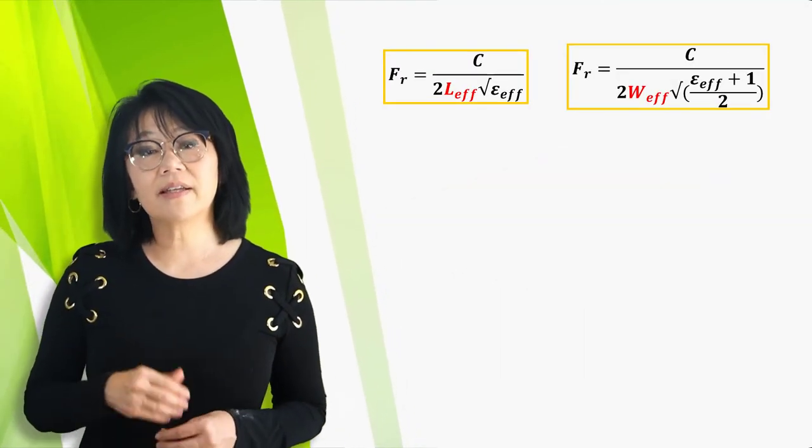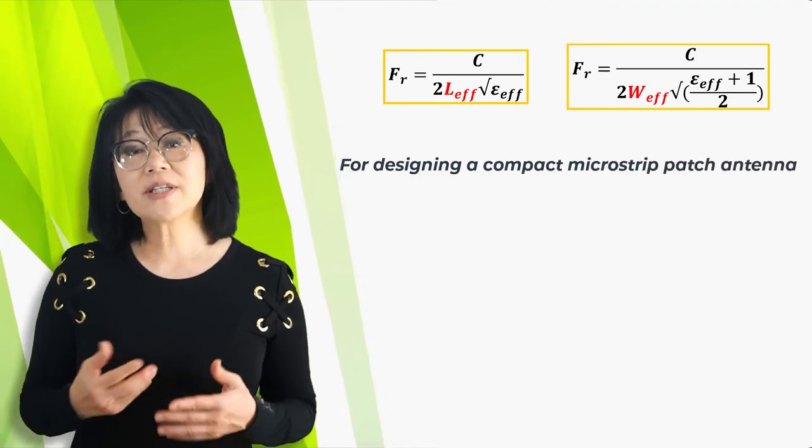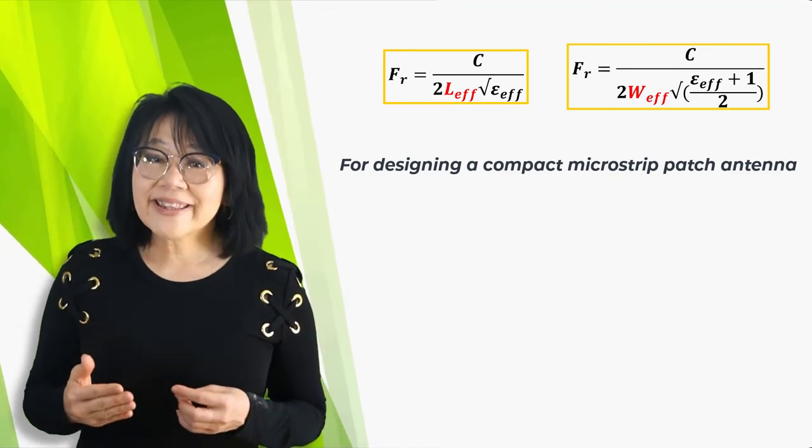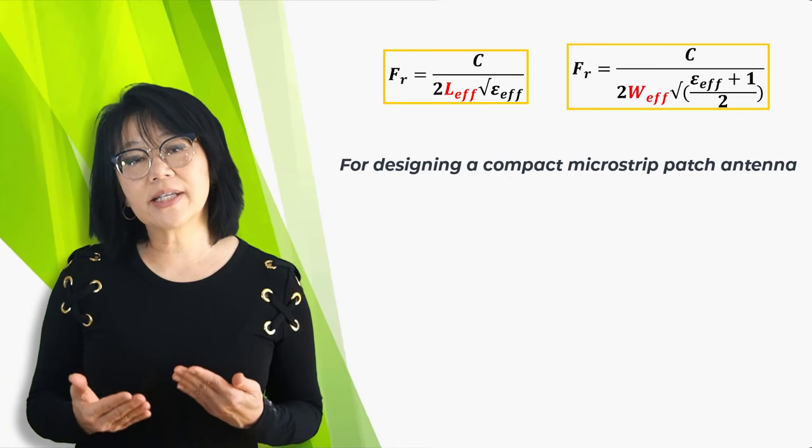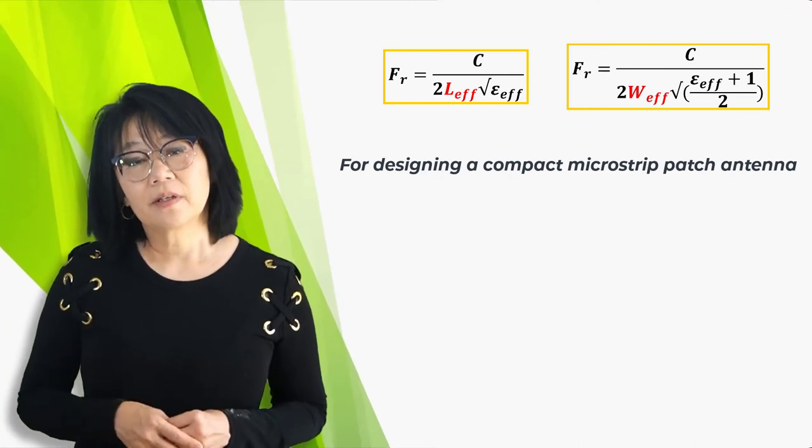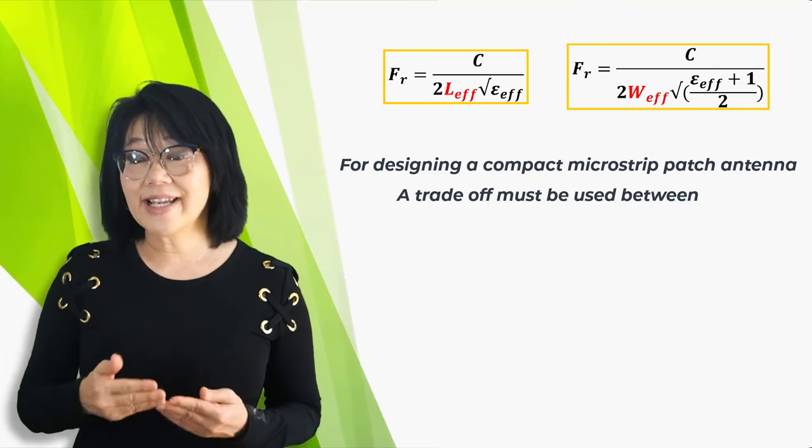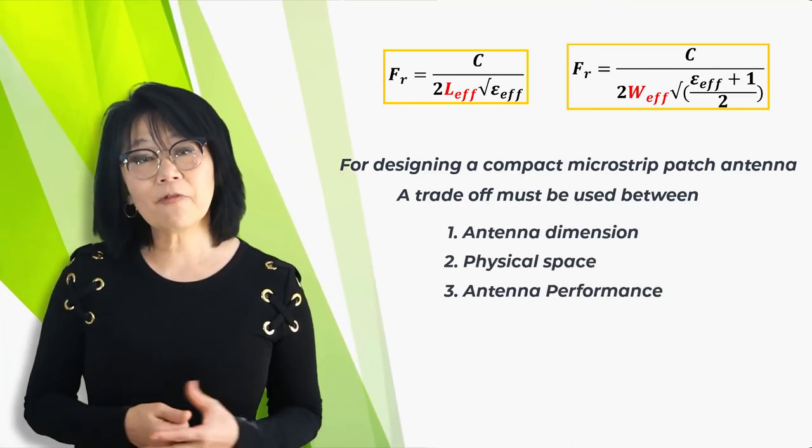So in order to design a compact microstrip patch antenna, the substrates with the higher dielectric constants must be used, but this configuration is also less efficient and they result in narrower bandwidth. So a trade-off must be realized between the antenna dimension, physical space, and the antenna performance.